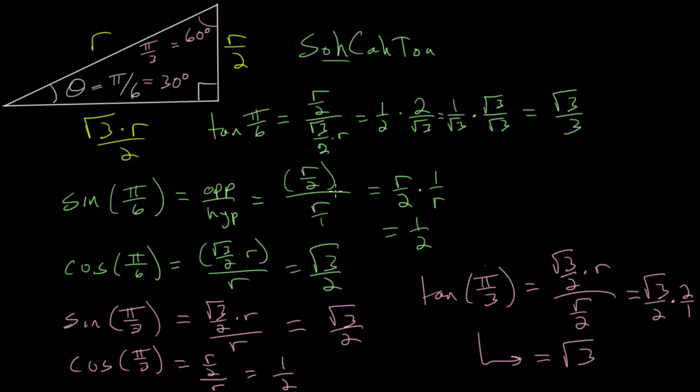So in conclusion, the trig values of the pi over 3 and pi over 6 angles simply come out of this 30, 60, 90 right triangle and the patterns that we can notice from that.